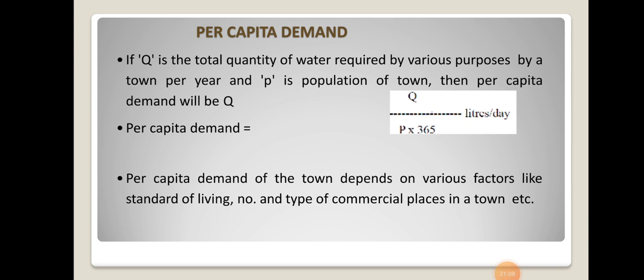Next, what is per capita demand? Per capita demand is the volume of water required per head. If Q is the total quantity of water required for various purposes by a town per year and P is the population of the town, per capita demand is calculated as Q divided by (P × 365), where 365 is the number of days in a year. Q/(P × 365) gives the total per capita demand in litres per day.